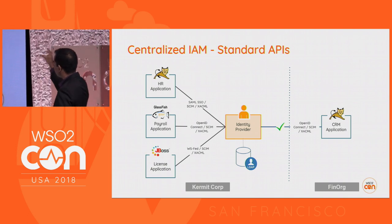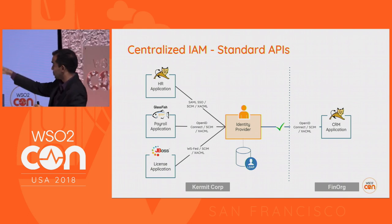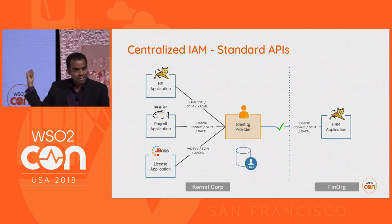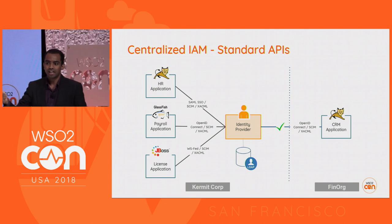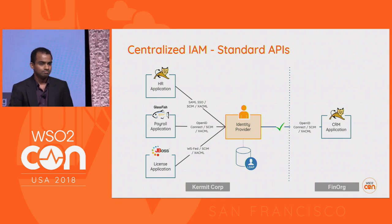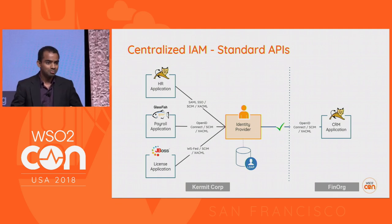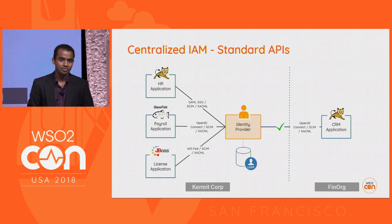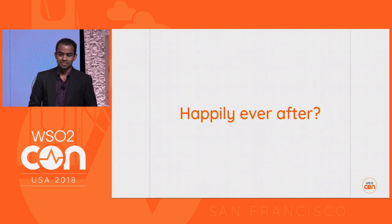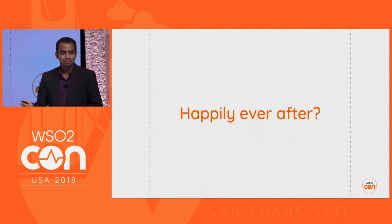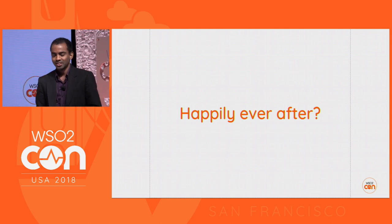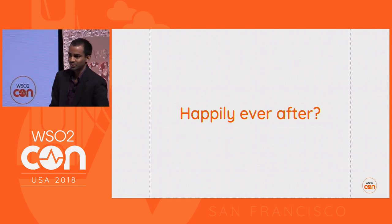Now if a FinNog CRM app wants to communicate with the identity provider, and it can talk in standard APIs, it can talk with Kermit's identity provider. So the problem is solved for Kermit — or is it? Did Kermit live happily ever after with the IAM solution? Not quite so.